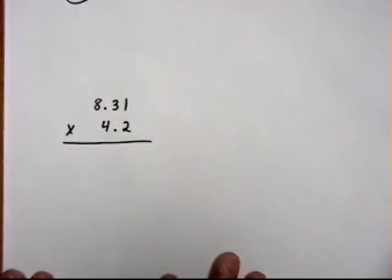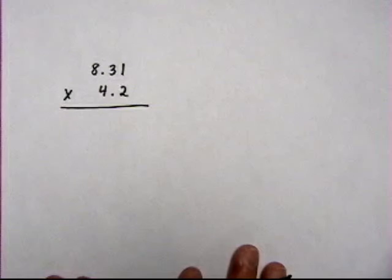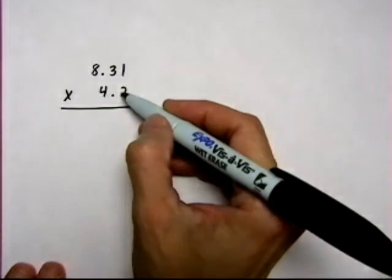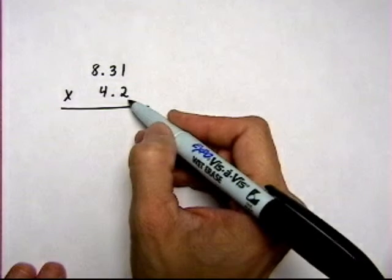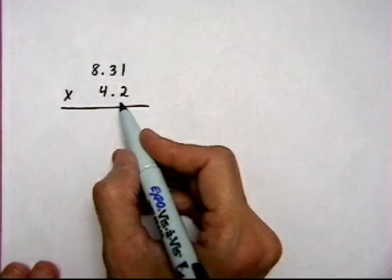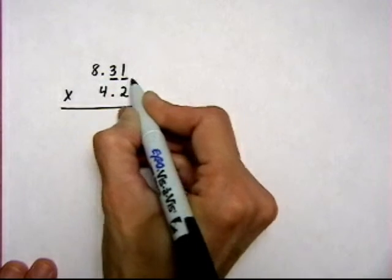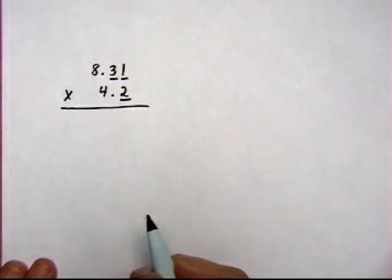And the last one, we've got 8.31 times 4.2. So again, I'm going to ignore the decimal points. And notice that they're not lined up like they would be adding and subtracting. We're just going to ignore them. And then we'll make sure the final answer has 1, 2, 3 decimal places in it.